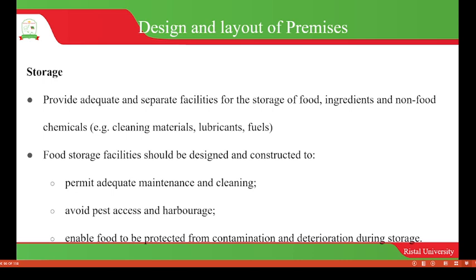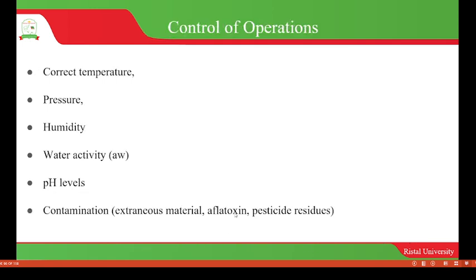Looking at storage, there should be adequate and separate facilities for storage of food, ingredients, non-food chemicals such as cleaning materials, lubricants, fuels, and so on. This will help to prevent cross-contamination or contamination of food with other chemicals. Food storage facilities should be designed and constructed to permit adequate maintenance and cleaning, avoid pest access and harbourage, and enable food to be protected from contamination and deterioration during storage.